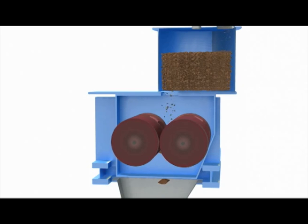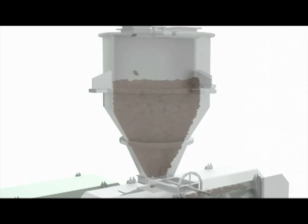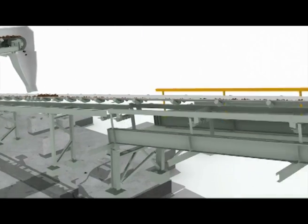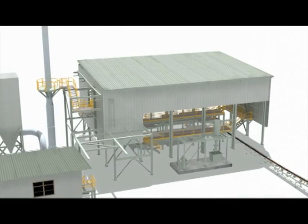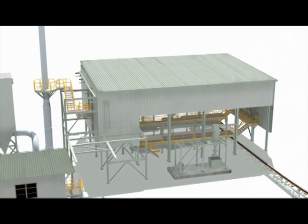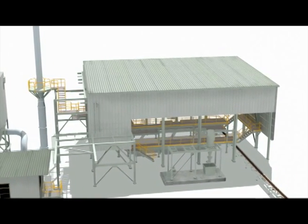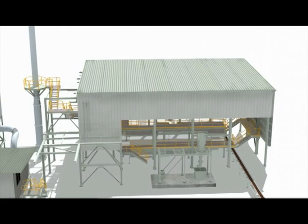The shale briquettes fall into the surge bin and are then fed through to the lump shale conveyor. Oil shale lumps and the oil shale briquettes are dried in a through-flow conveyor dryer to reduce the moisture content of the shale.